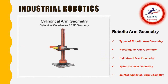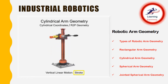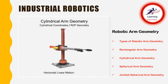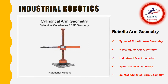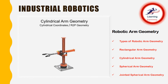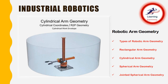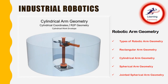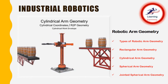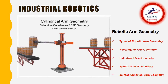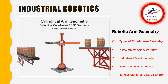Robotic arms with cylindrical geometry move linearly in two directions. Vertical linear motion is called stroke, horizontal linear motion is called reach, and rotational motion is called swing. Cylindrical geometry robots have a cylindrical work envelope. The advantages include a robotic arm reach that is deep at both the top and bottom of the stroke, quick movements with high repeatability, a smaller use of floor space, and a larger payload capacity due to structural rigidity.